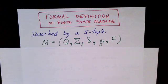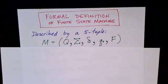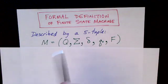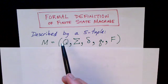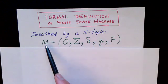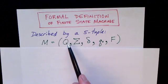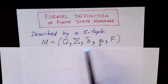We've seen an informal example of a finite state machine specified with a picture or a graph. Now let's give a formal definition. A finite state machine, such as the one we saw before, is described by five different things — a quintuple. We can give it a name M and say it's defined by those five things.